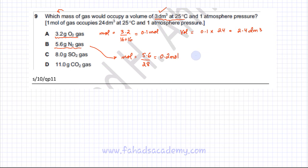Now I'm going to find the volume of this gas. Volume would be moles of gas, 0.2, multiplied by the molar volume which is 24 decimeter cubed. 24 multiplied by 0.2 gives me 4.8 dm³, which is again not the correct answer.